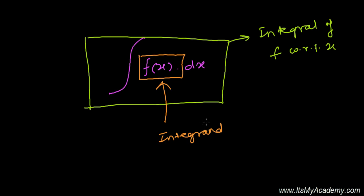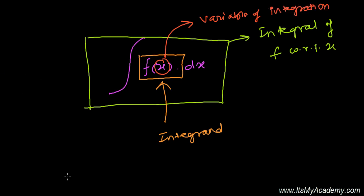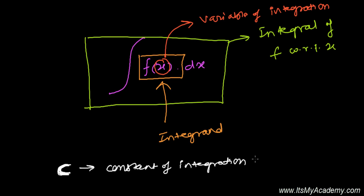This x here is called the variable of integration. And after doing integration, you will put plus C. This plus C represents the constant of integration. We assume it as some constant function — every time after integrating, you must put the plus C.